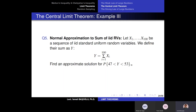So if I want to answer this question, that probability statement is related to a normal random variable Y. What I need to do is determine the expected value of Y and the variance of Y, so I would know the location and scale parameters of this normal random variable.